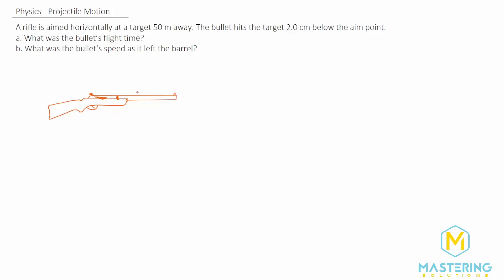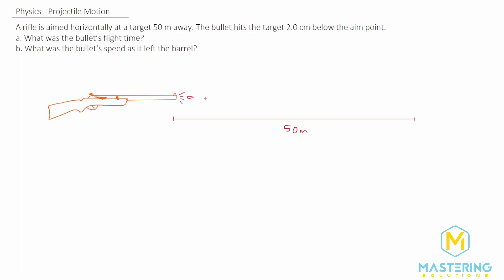Welcome to Mastering Solutions. In this projectile motion problem, we have a rifle aimed horizontally at a target 50 meters away. The bullet, after we fire it, hits two centimeters below the aim point. We need to figure out the flight time of the bullet and the speed of the bullet as it left the barrel — solving for velocity and the time the bullet was in the air.